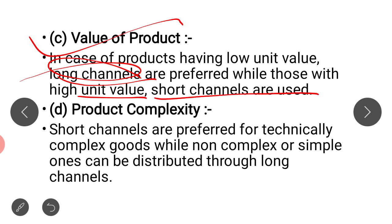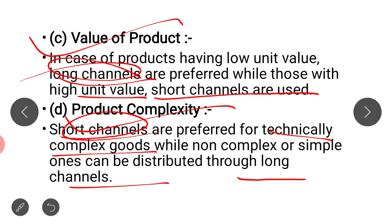Another product-related factor is product complexity. If your goods are technically complex, such as industrial or engineering products like machines or generators, then we use short channels of distribution. If your products are simple or non-complex, then we prefer long channels because we don't need expert advice and guidance for those products.